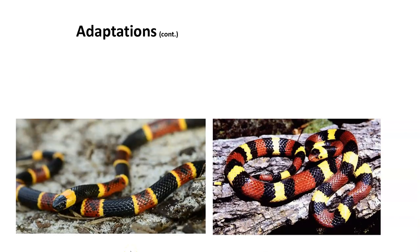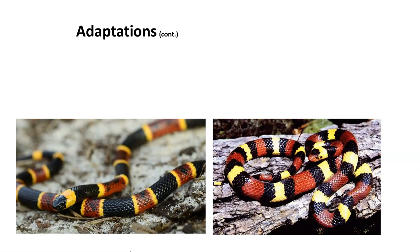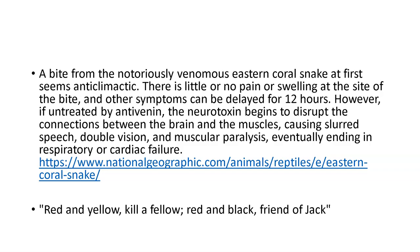One of these snakes, if it bites you, will kill you — and one will not. Both are in Florida. So here's a saying that might save your life one day. A bite from the notoriously venomous eastern coral snake at first seems anticlimactic — there's no pain, swelling can be delayed 12 hours. However, the neurotoxin attacks your nervous system — brain, nerves, spinal cord — and begins to disrupt connections between the brain and the muscles, causing slurred speech, double vision, and paralysis, eventually preventing you from breathing or your heart stopping. Red on yellow, kill a fellow. Red on black, friend of Jack. I actually knew someone bitten by a coral snake who started feeling the effects while in the hospital.